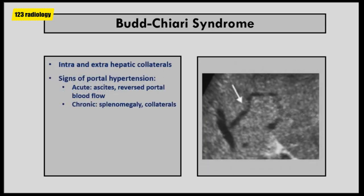Other indirect signs of Budd-Chiari syndrome are intra- and extra-hepatic collateral vessels. Intrahepatic collaterals allow draining venous blood from obstructed areas to preserved areas of the liver to the upper portion of the inferior vena cava. In addition to cavocaval collaterals that characterize Budd-Chiari syndrome, portosystemic collaterals may occur similar to those seen in portal hypertension. In the acute stage, there is ascites and reverse portal blood flow. In the chronic stage, splenomegaly is a common finding with reverse portal blood flow.